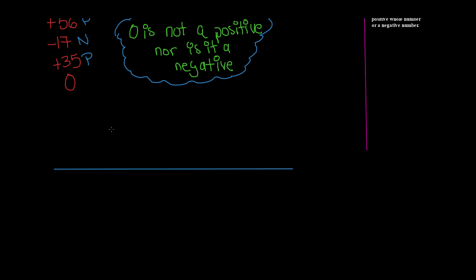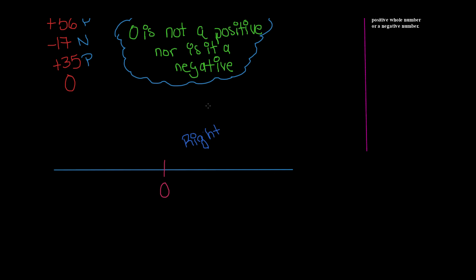Here's the basic rule that you need to know about number lines and integers. Zero is going to be the center of your number line always. Since it's not a positive and it's not a negative, it is always going to be in the center. Anything to the right side of the number line is going to be a positive number, and anything to the left side has to be a negative number, because there are only two categories — positive and negative.